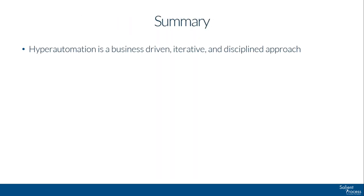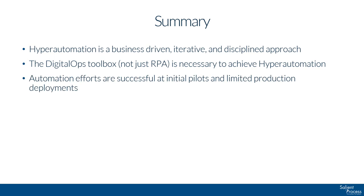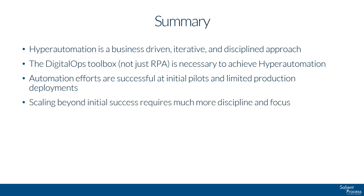In summary, hyper automation is a business-driven, iterative, and disciplined approach to automation that allows you to accelerate your automation efforts and results. You cannot achieve hyper automation with RPA alone — the Digital Ops Toolbox is key to having the necessary tools to scale. While automation efforts are usually successful in the initial pilot and small departmental deployments, companies struggle with scaling beyond those initial successes. To get to hyper automation requires a more rigorous, business-driven approach of defining your business objectives up front and letting those drive the digital decisions you make as you grow your automation program.